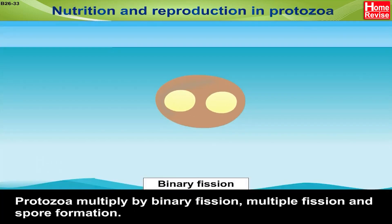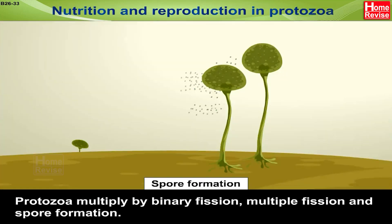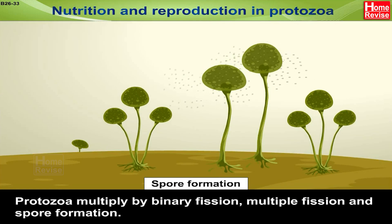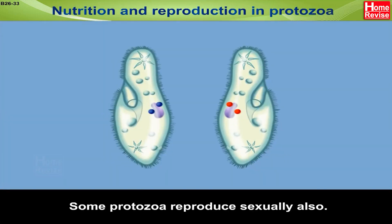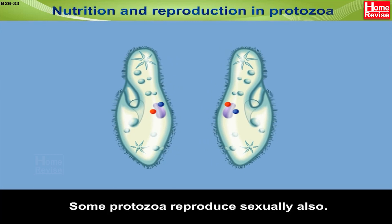Protozoa multiply by binary fission, multiple fission, and spore formation. Some protozoa reproduce sexually also.